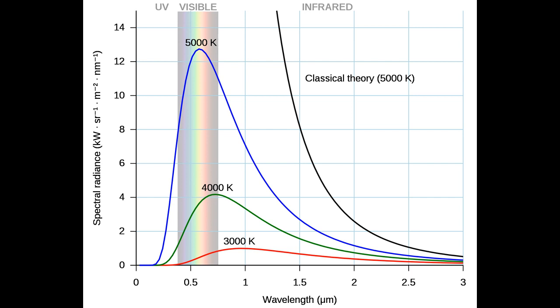A black body in thermal equilibrium emits electromagnetic radiation called black body radiation. The radiation is emitted according to Planck's law, meaning that it has a spectrum that is determined by the temperature alone, not by the body's shape or composition.